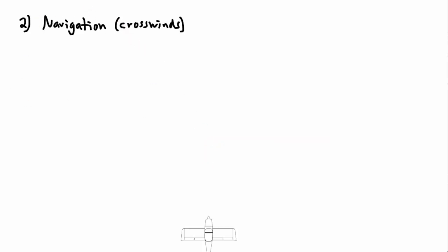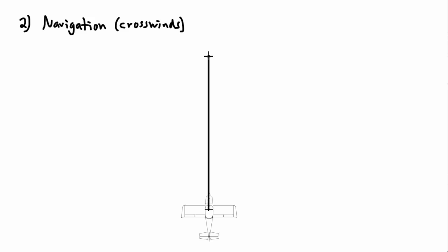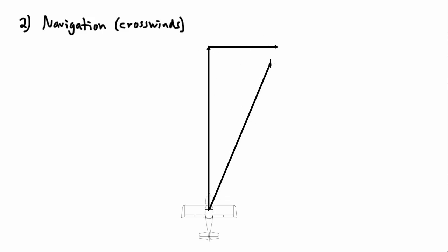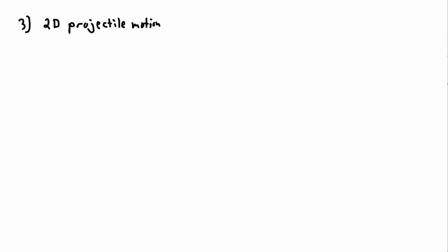Vectors are also useful for navigation. Say you're flying an airplane heading straight north, but there's a wind pushing you to the right. You're trying to go north but the wind is going right — so what actually happens? If you can add up those vectors, you'll find that your actual path over the ground goes diagonally. Vectors are very useful for combining these effects.